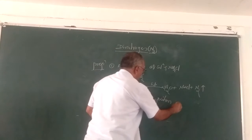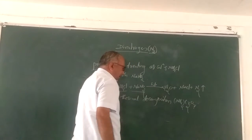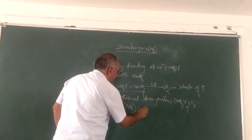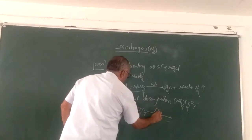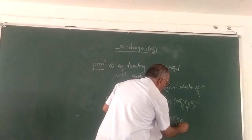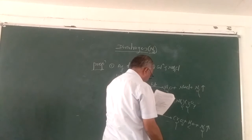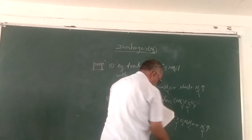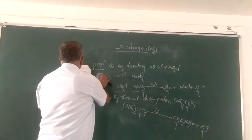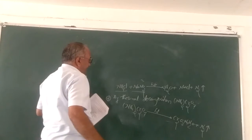The second method is by the thermal decomposition of ammonium dichromate. When ammonium dichromate is heated in a hard glass tube, you get chromium oxide and water along with liberation of nitrogen gas.